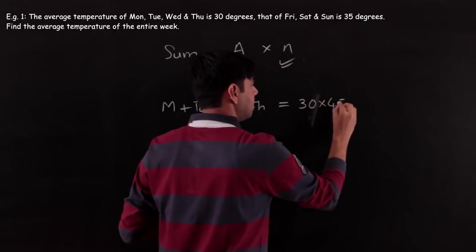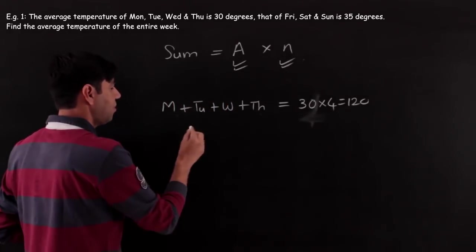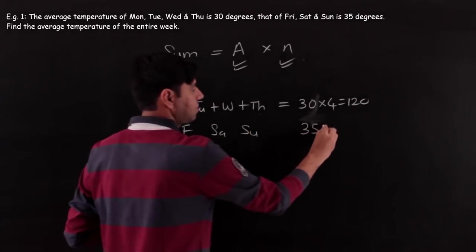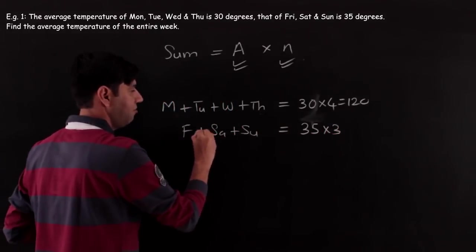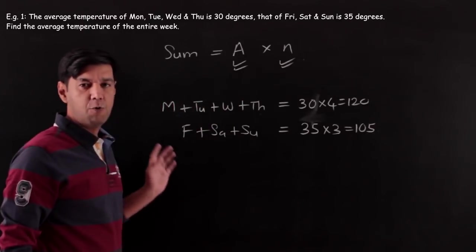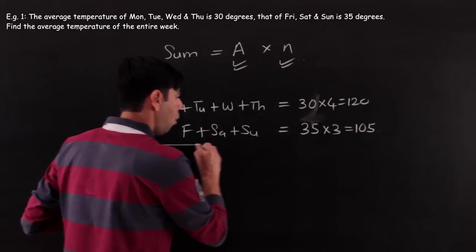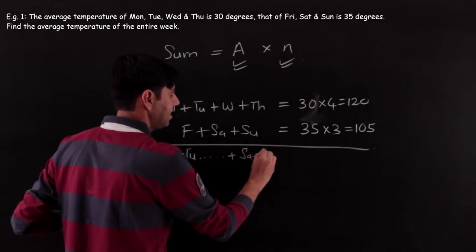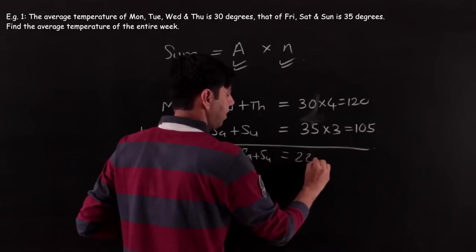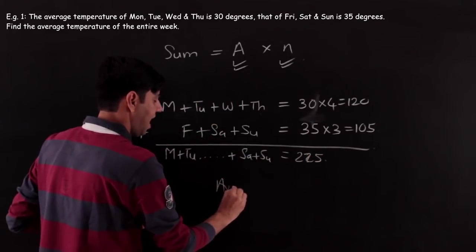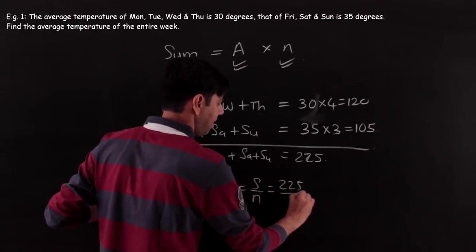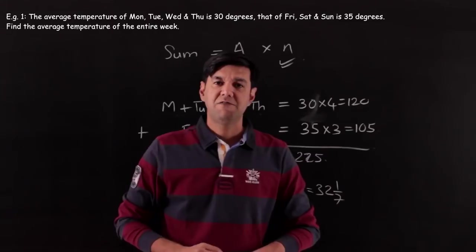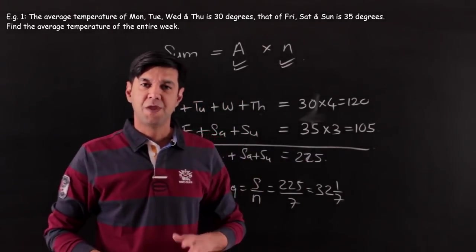The second set covers Friday, Saturday, Sunday — average 35, three observations, so the sum is 35 × 3 = 105. To find the average temperature of the entire week, we add the two sums: 120 + 105 = 225. The average is 225 ÷ 7 observations. Since 7 × 32 = 224, we get 225/7 = 32.14 degrees.